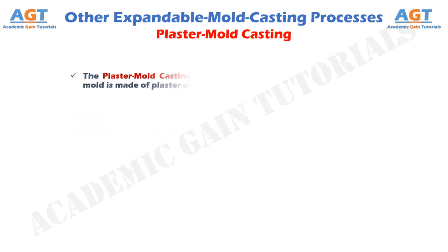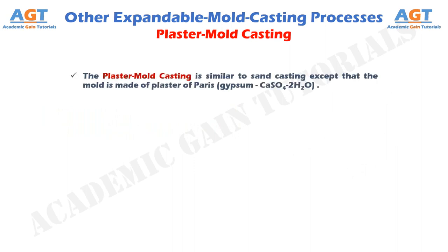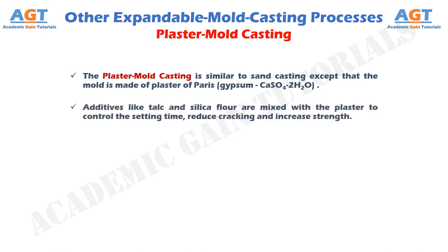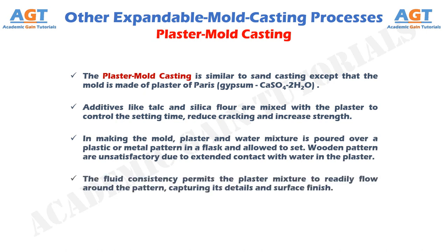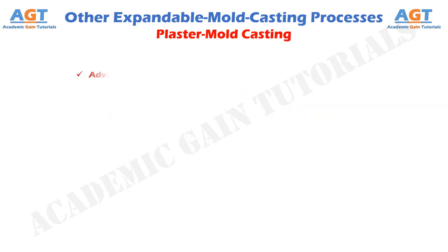Plaster mold casting. The plaster mold casting is similar to sand casting, except that the mold is made of plaster of Paris or gypsum. Additives like talc and silica flour are mixed with the plaster to control the setting time, reduce cracking, and increase strength. In making the mold, the plaster and water mixture is poured over a plastic or metal pattern in a flask and allowed to set. Wooden patterns are unsatisfactory due to extended contact with water in the plaster. The fluid consistency permits the plaster mixture to readily flow around the pattern, capturing its details and surface finish.